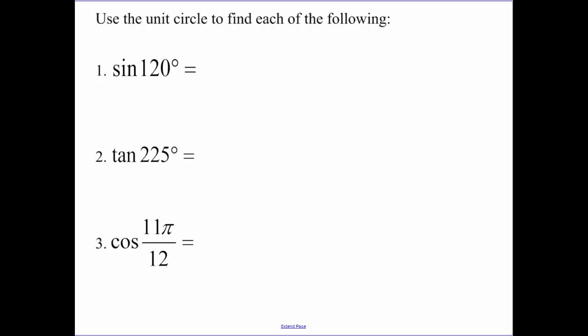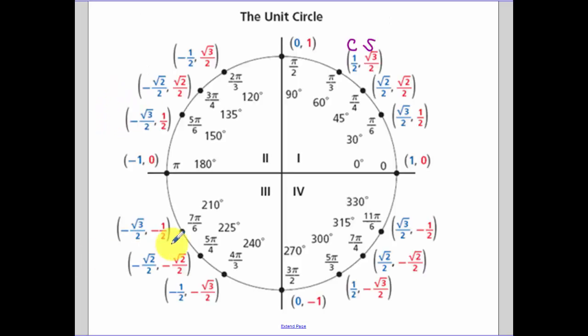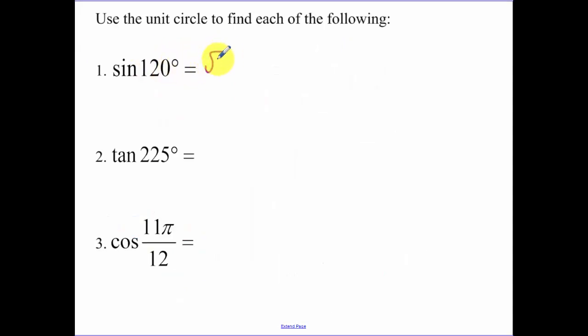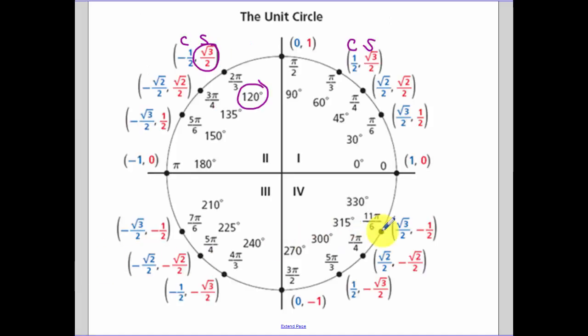So now our questions. Sine of 120 degrees. So you go to 120 degrees. 120 degrees is right here. We go cosine, sine, root 3 over 2. So this is equal to root 3 over 2. Tangent 225. Find 225. Tangent is sine over cosine. So that's going to be equal to 1.